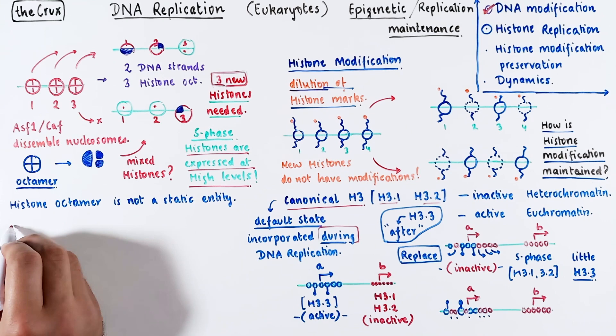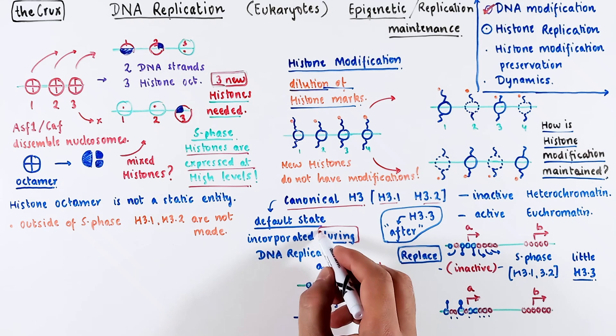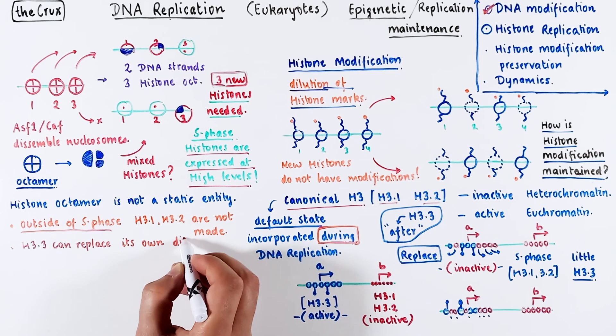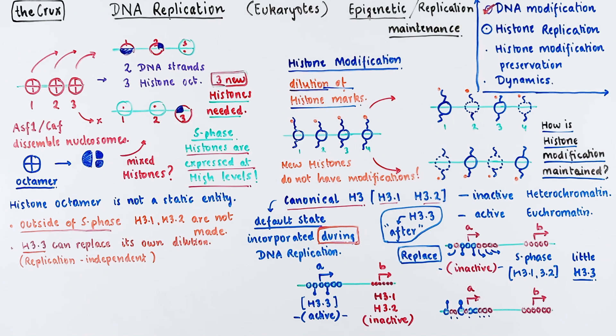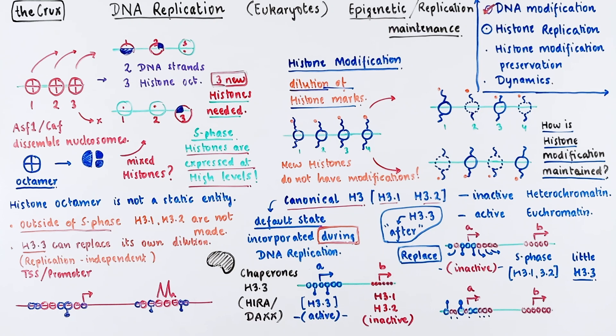To put it another way, outside of S phase, H3.1 and H3.2 are not made, as we have already noted, which means only H3.3 is available to replace the canonical H3 histones outside of S phase. So the incorporation of 3.3 is a replication-independent process. Say you have a promoter or transcription start site or a regulatory element where you need to replace canonical histones. There are specific chaperones for H3.3 called Hira or Dax that can bring 3.3 to the required locus to replace the canonical H3 histones.